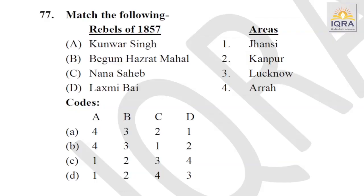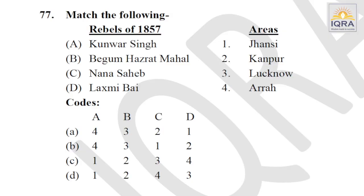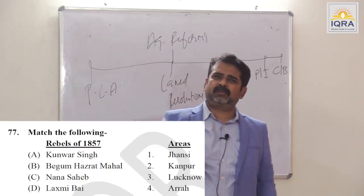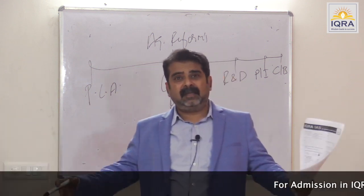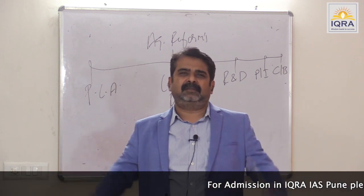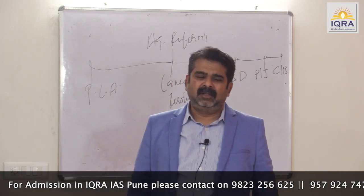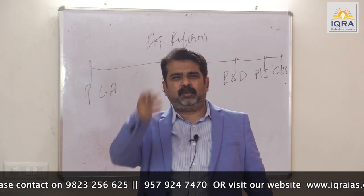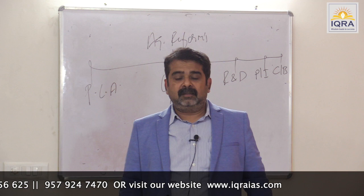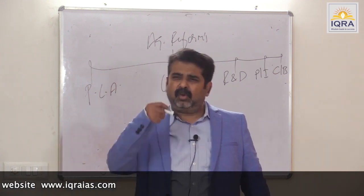Rebels of 1857 and their areas — a general question. Answer is A. The Revolt of 1857: Turks and Mughals were foreigners who came from outside but turned into Indians. The English came from outside and remained outsiders, leading to economic, political, social, and religious exploitation. This revolt was the outcome of suppression and exploitation on all fronts. Answer is A.